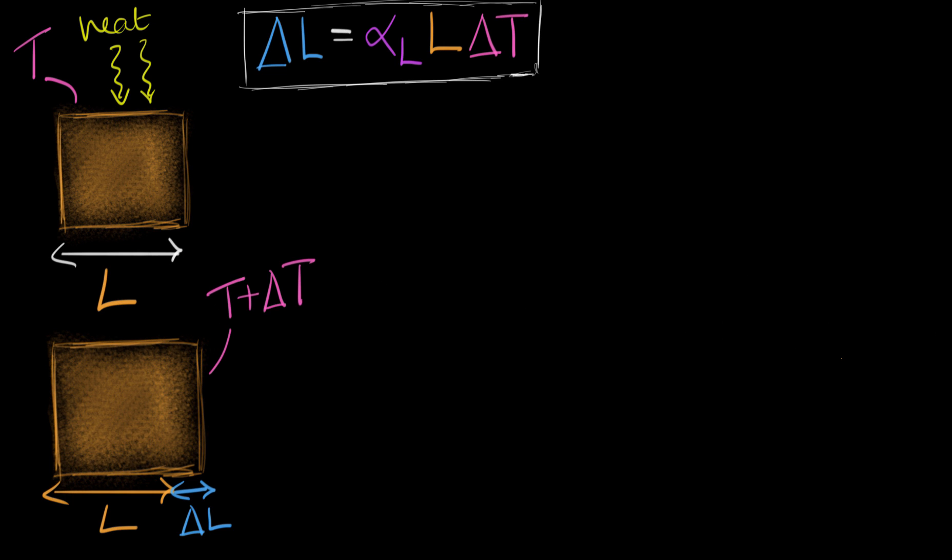Hey, that's easy. For square, the area is just the side squared, right? So let's write that down. So the area initially, that would be L squared. Side squared is L squared. This is the initial area.